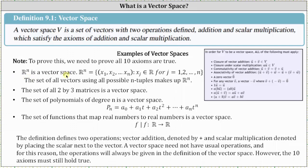First, Rn is a vector space, where Rn is a collection of ordered lists or n-tuples, x sub one through x sub n, where x sub j is a real number for j equals one through n. The set of all vectors using all possible n-tuples makes up Rn, which is a vector space. The set of all two by three matrices is a vector space. The set of polynomials of degree n is a vector space in the form shown below as P sub n. And the set of functions that map real numbers to real numbers is also a vector space. To show all these are vector spaces, we would have to go through all 10 axioms and show they hold true.